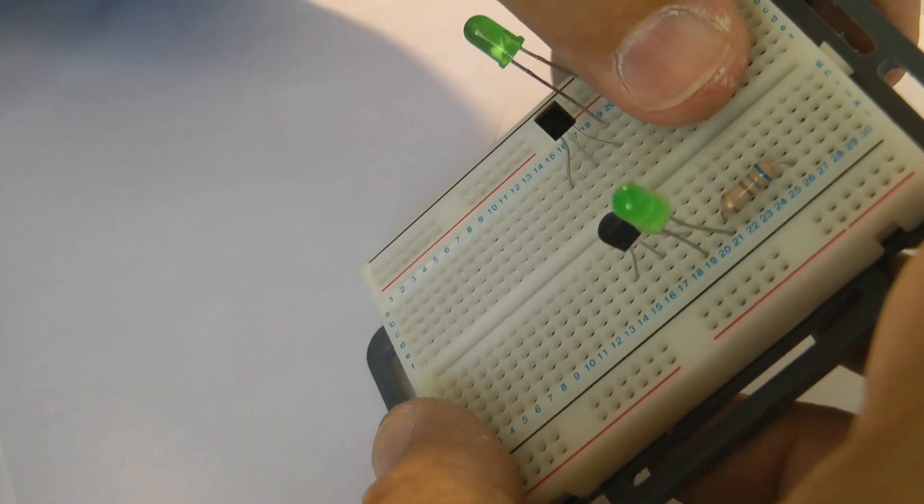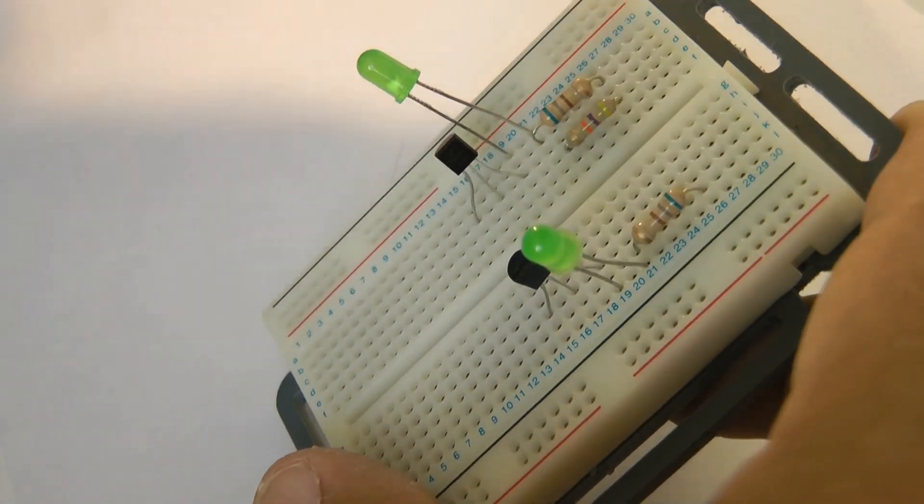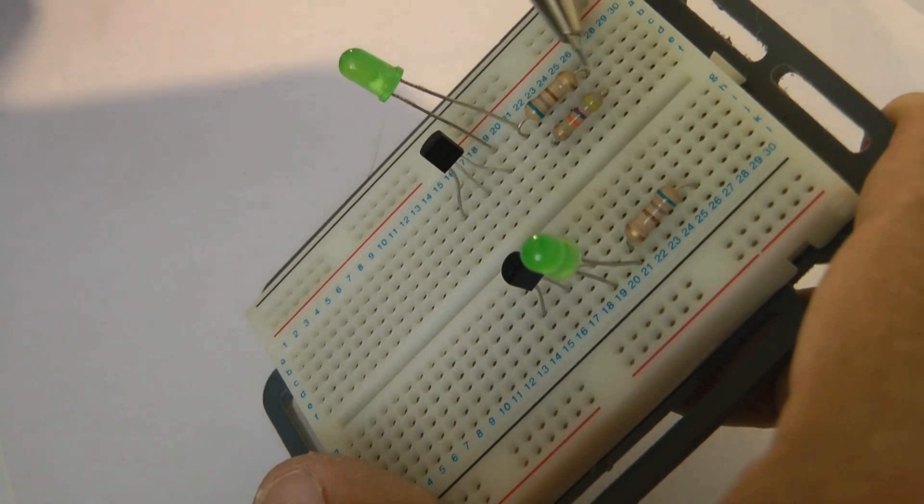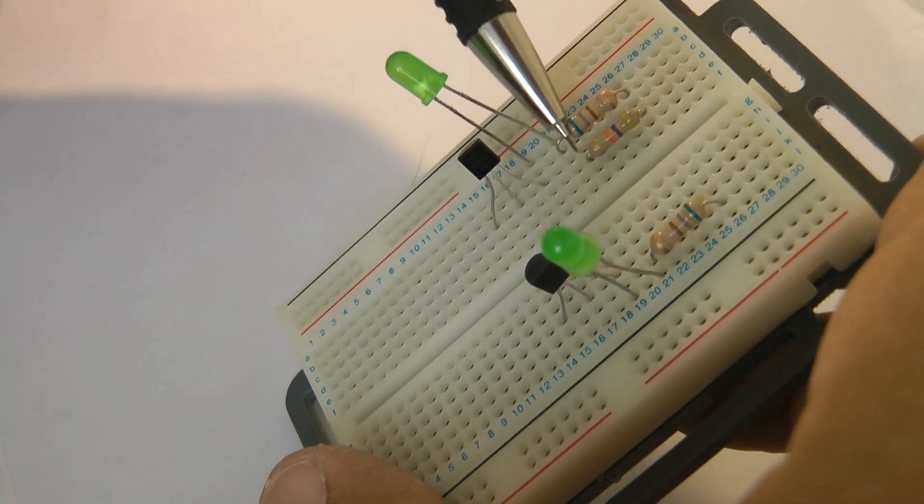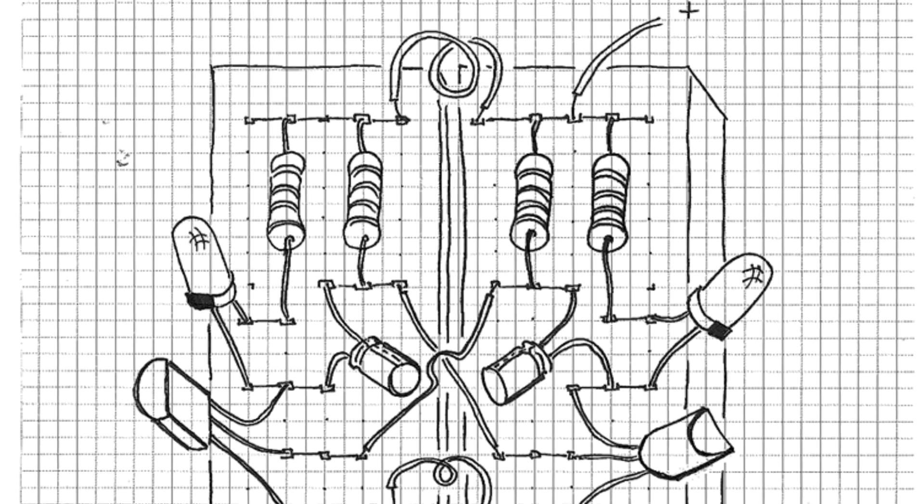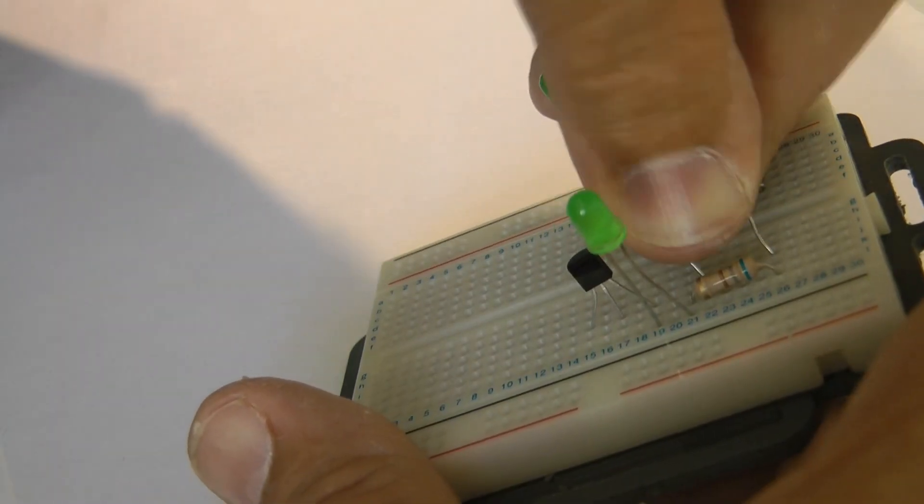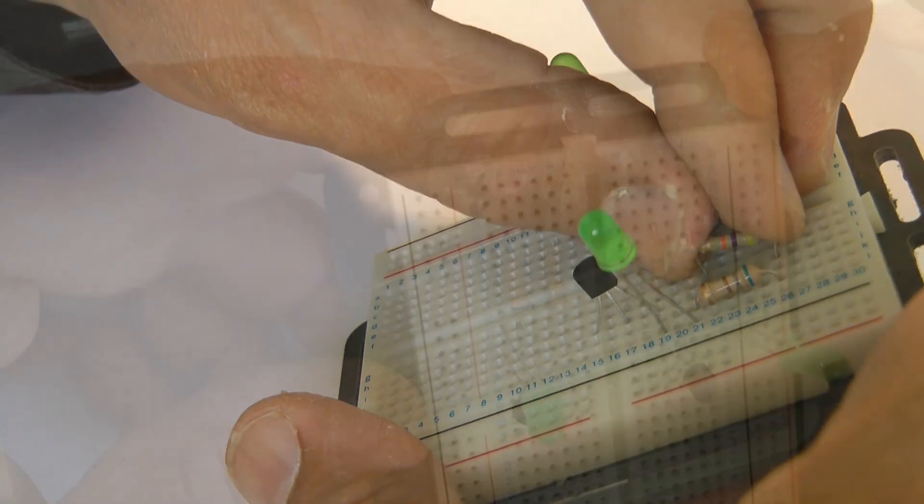So when we talk about breadboards in the breadboarding video I'll explain that in more detail. Sometimes the resistors resist going into the board, but notice how this resistor is in the same row there but it's in a different row over here.